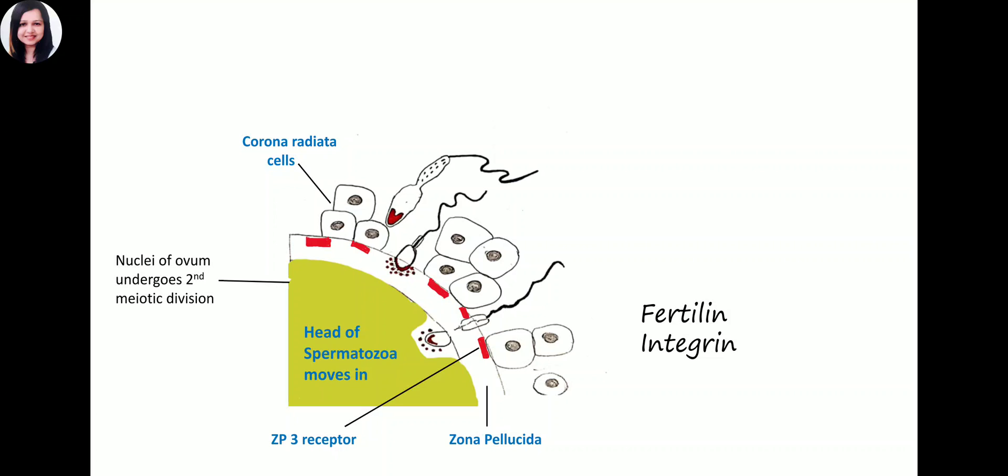What blocks polyspermy? Only one sperm will be victorious; the others will not be able to penetrate the membrane. The first sperm to reach the ovum fuses and simultaneously triggers a chemical change in the plasma membrane of the ovum so that the outer layer becomes impenetrable to the entry of any further sperms.